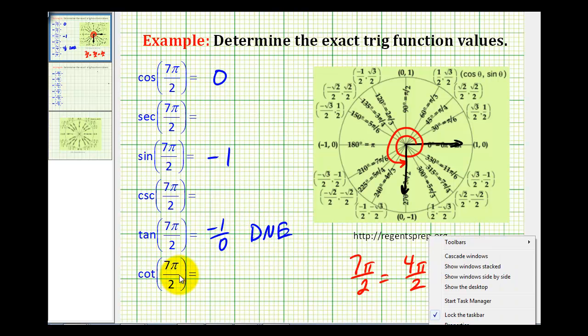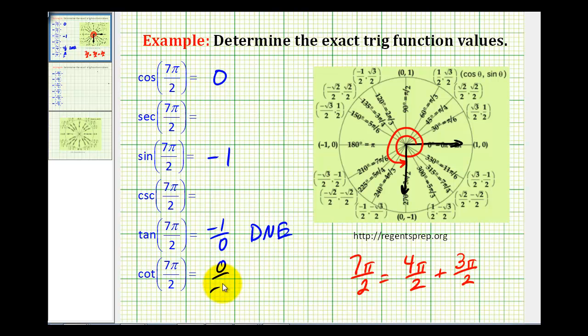While we're here, cotangent theta is the reciprocal of tangent theta. The reciprocal of -1/0 would be 0/-1, which equals 0.